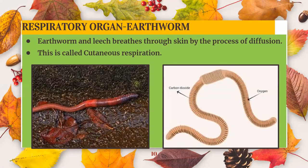Different animals ranging from microorganisms to higher animals have different organs and mechanisms of breathing. Let us now study about different mechanisms of respiration in different organisms. Earthworms and leeches have a soft, slimy and moist skin. Hence, gases can easily pass in and out of the earthworm through its skin by the process of diffusion. This is called cutaneous respiration.